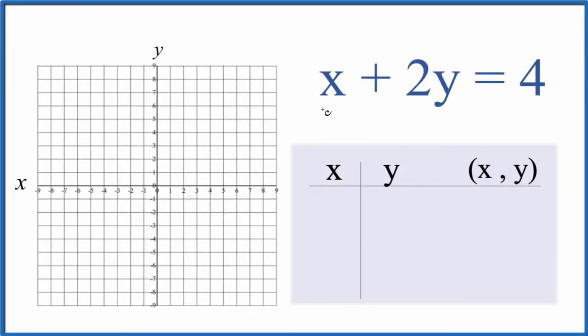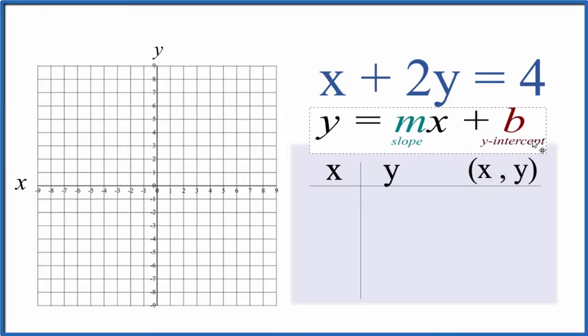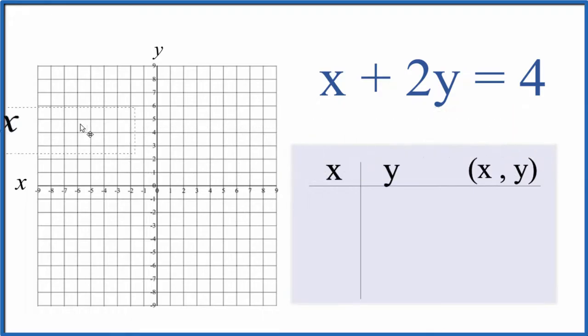I was asked to graph the linear equation x plus 2y equals 4, and there are a few ways we could do this. We could get this into slope-intercept formula and then we could graph it that way. There's a link at the end of this video on how to do that. We could also just use a table of values, and that's what I'm going to do here.